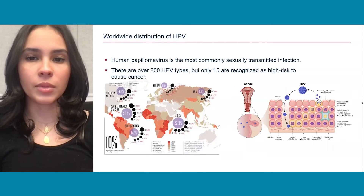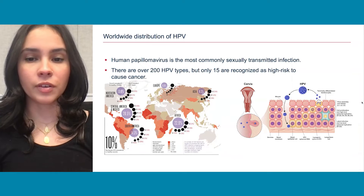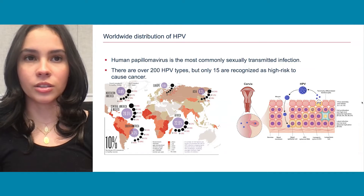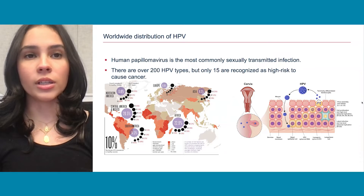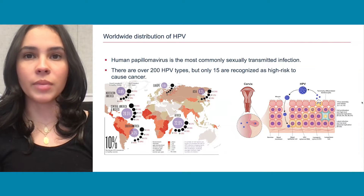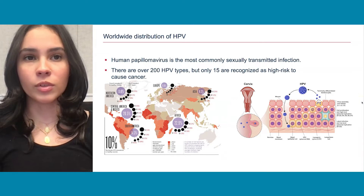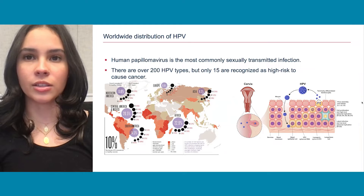HPV is the most commonly sexually transmitted infection, and there are over 200 types of HPV, but only 15 are recognized as high-risk and can cause cancer. According to the CDC, in 2018 there were about 43 million HPV infections, mainly among people in their teens or early 20s. In most cases, HPV goes away on its own within two years, but if the infection is not cleared, it can lead to cancer.